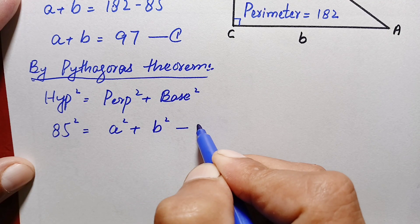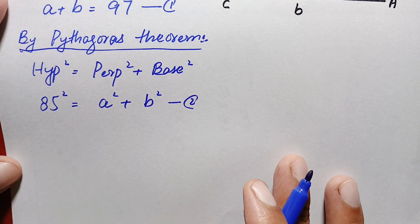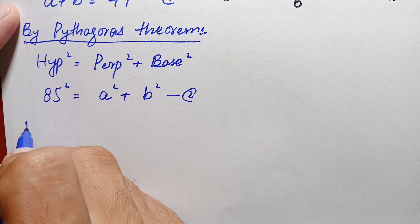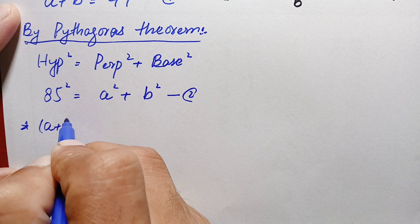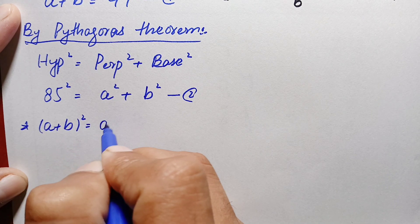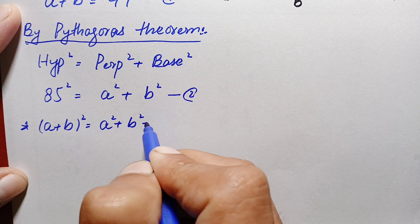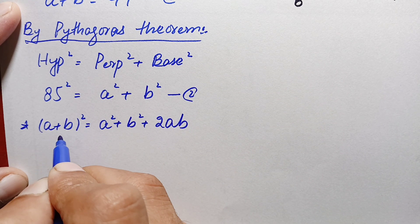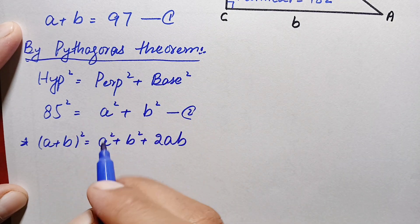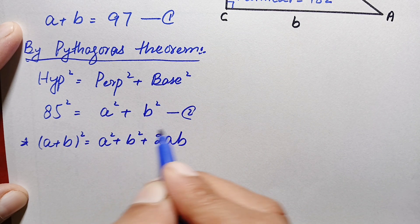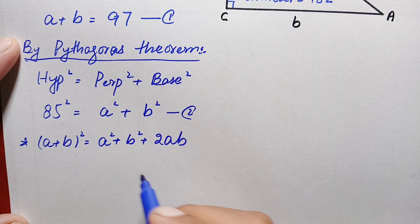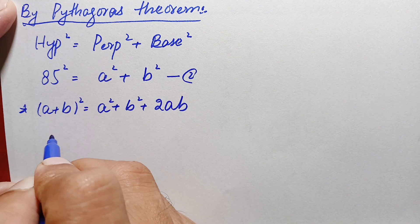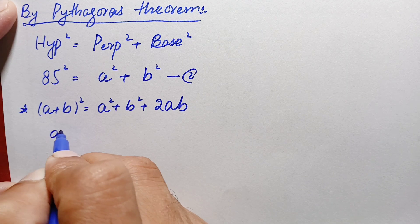Now we will use the algebraic identity: (a + b)² = a² + b² + 2ab. We have the value of a + b from equation one, which is 97, and the value of a² + b² from equation two, which is 85². We substitute these two values into this identity.